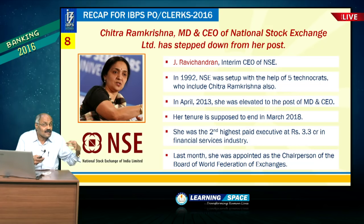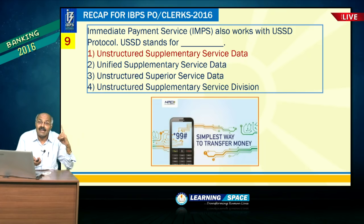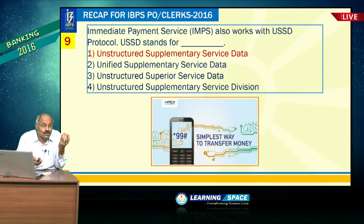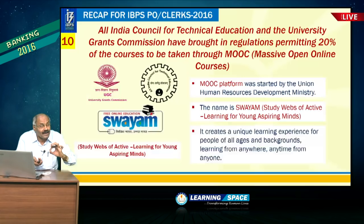People are talking about *99# — star double nine hash. This works on USSD protocol, that is Unstructured Supplementary Service Data. It works with ordinary feature phones also, without internet connectivity. It is also known as the National Unified USSD Platform.